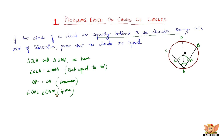So we have angle, side, angle. Using the ASA criterion, we prove that triangles OLA and OMA are congruent to each other, because of which OL equals OM — corresponding parts of congruent triangles are equal.